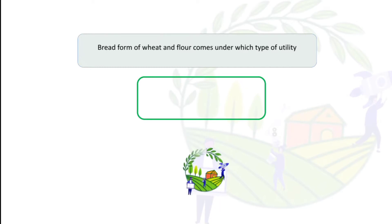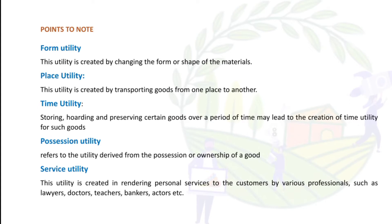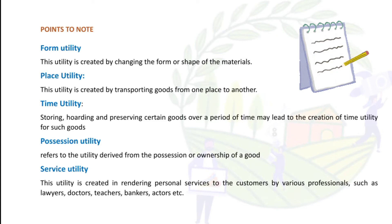Bread made from wheat and flour comes under form utility. Storage and freezing comes under time utility. Form utility is created by changing the form or shape of materials. Place utility is created by transporting goods from one place to another. Time utility is created by storing and preserving goods over a period of time. Position utility is the utility derived from the ownership of a good. Service utility is created by rendering personal services to customers by professionals such as lawyers, doctors, and teachers.